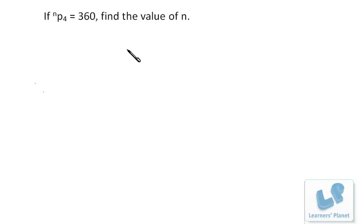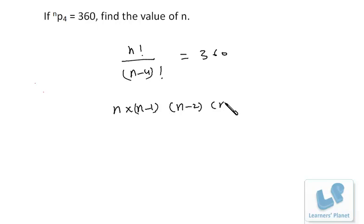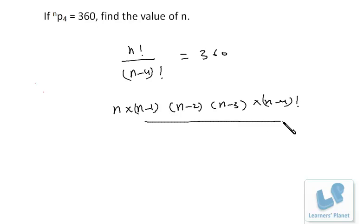NPR is n factorial by (n minus 4) factorial. So n factorial by (n minus 4) factorial is given as 360. Now n factorial can be written as n × (n−1) × (n−2) × (n−3) × (n−4) factorial, divided by (n−4) factorial, equals 360.